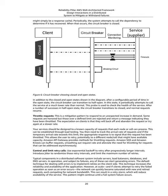Throttle requests: This is a mitigation pattern to respond to an unexpected increase in demand. Some requests are honored but those over a defined limit are rejected and return a message indicating they have been throttled. The expectation on clients is that they will back off and abandon the request or try again at a slower rate. Your services should be designed to a known capacity of requests that each node or cell can process, established through load testing. You then need to track the arrival rate of requests; if the temporary arrival rate exceeds this limit, the appropriate response is to signal that the request has been throttled, allowing the user to retry potentially to a different node or cell that might have available capacity.